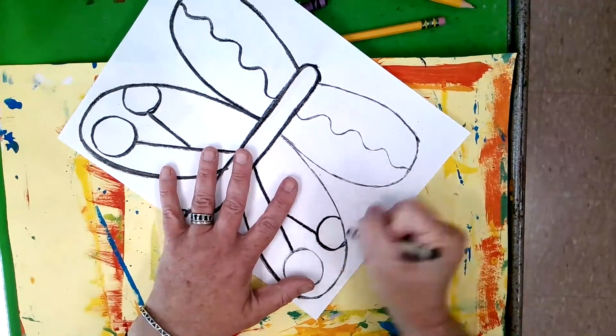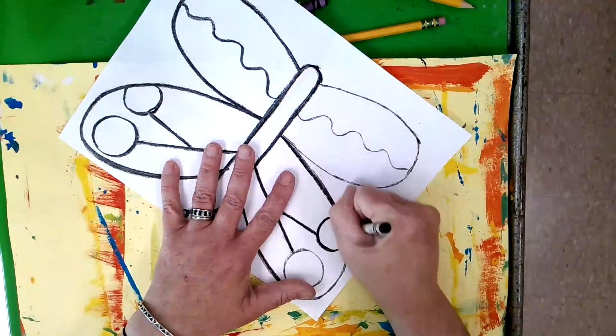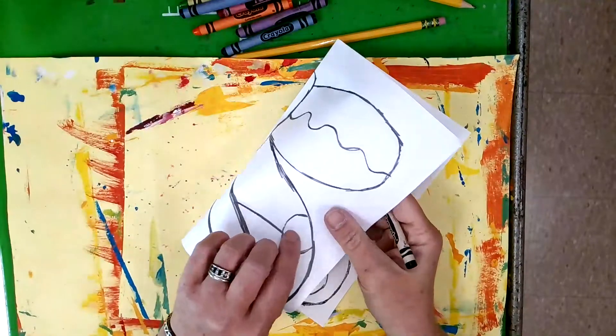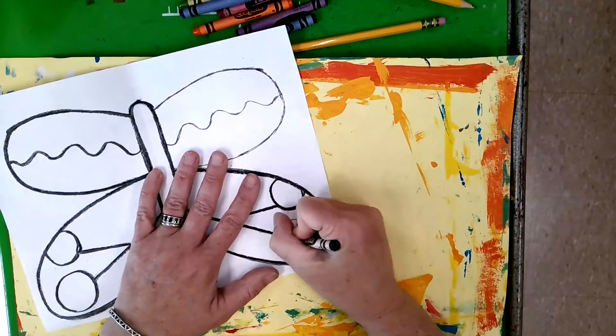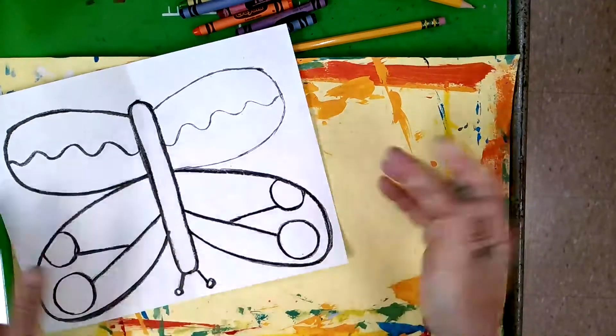If you try to do this with something light like yellow or a pale pink, it's really hard to see it through the back. Black is a great thing to start with because that's always a nice color for an outline.